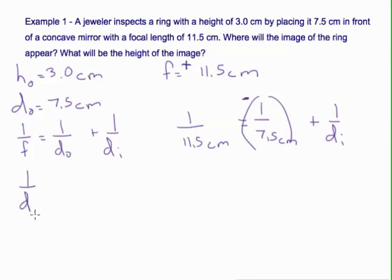So we have 1 over the distance for the image. So we have 1 over 11.5 minus 1 over 7.5. And now you can put that into your calculator. You get 1 over the image distance is about negative 0.4638.